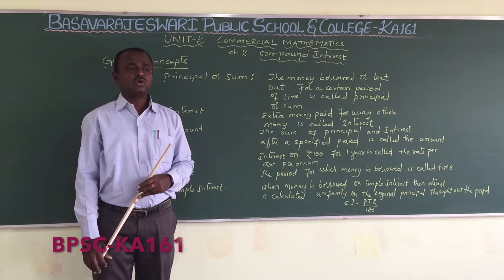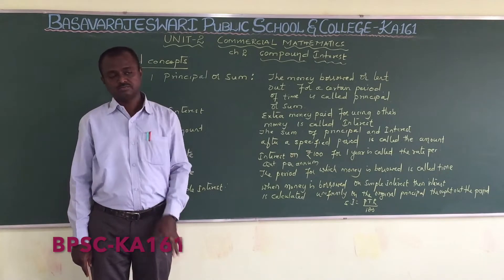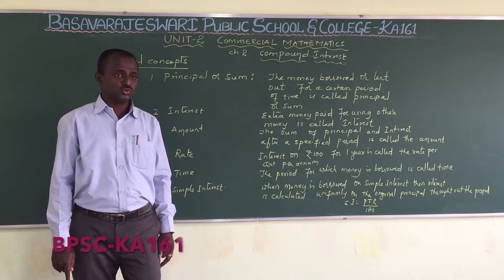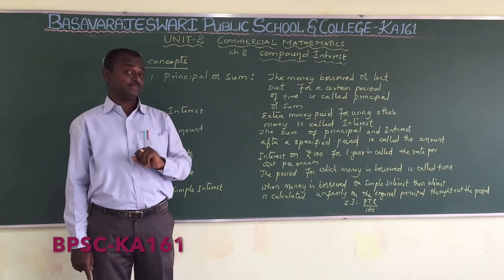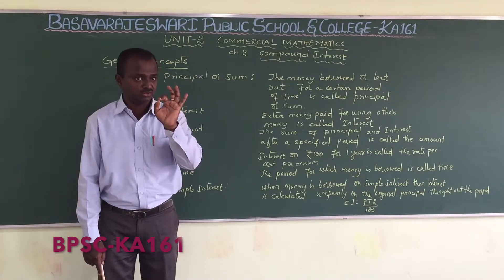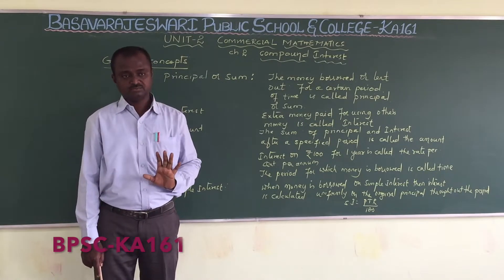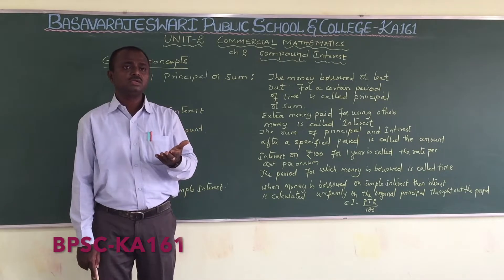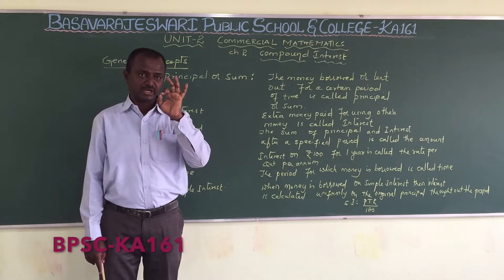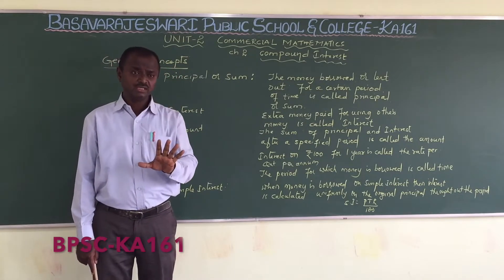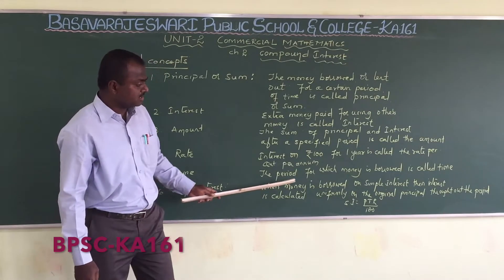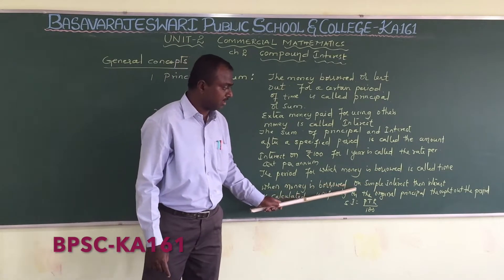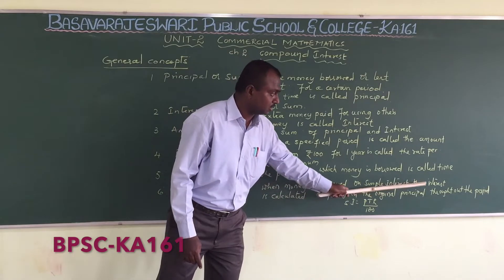When money is borrowed on simple interest, then interest is calculated uniformly on the original principal throughout the period. For example, if I borrowed 10,000 rupees, at the end of two years interest will be calculated on the original principal only — that is 10,000 rupees. Whether it is three years or four years, the original principal never changes. They will always take the original principal only.